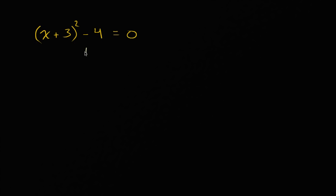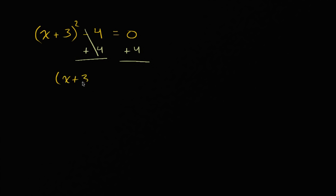The best way to do that is to add four to both sides. Adding four to both sides will get rid of this subtracting four — this negative four on the left-hand side. So we're just left with x plus three squared. And on the right-hand side, I'm just going to have zero plus four. So x plus three squared is equal to four.